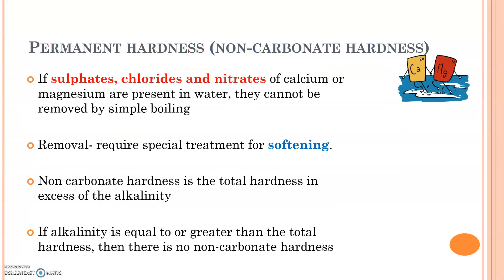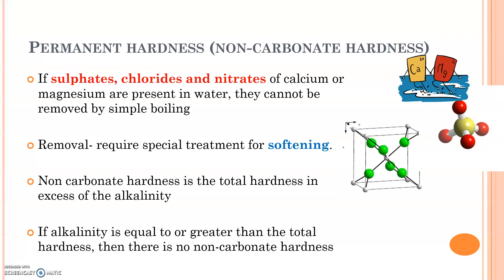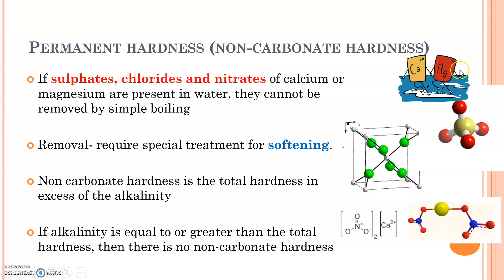Next is permanent hardness, or non-carbonate hardness, where the presence of carbonates is not the cause. The permanent hardness is due to the presence of sulfates, chlorides, and nitrates of calcium and magnesium, and this is permanent.